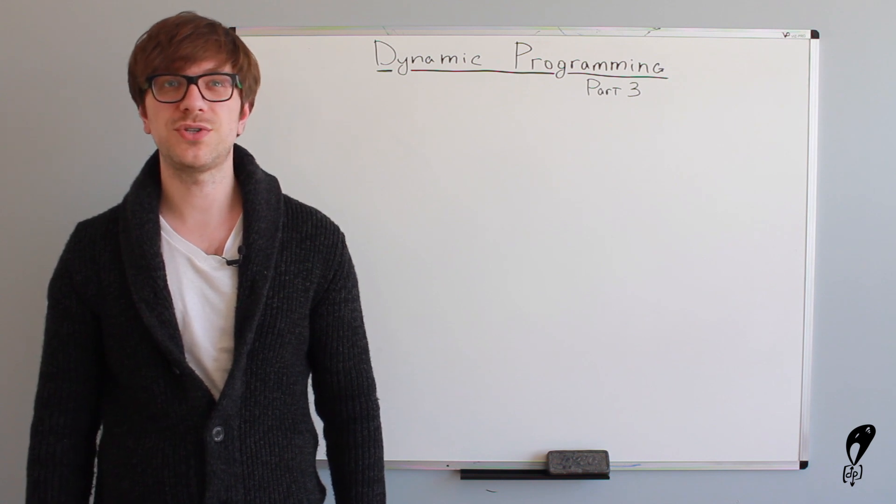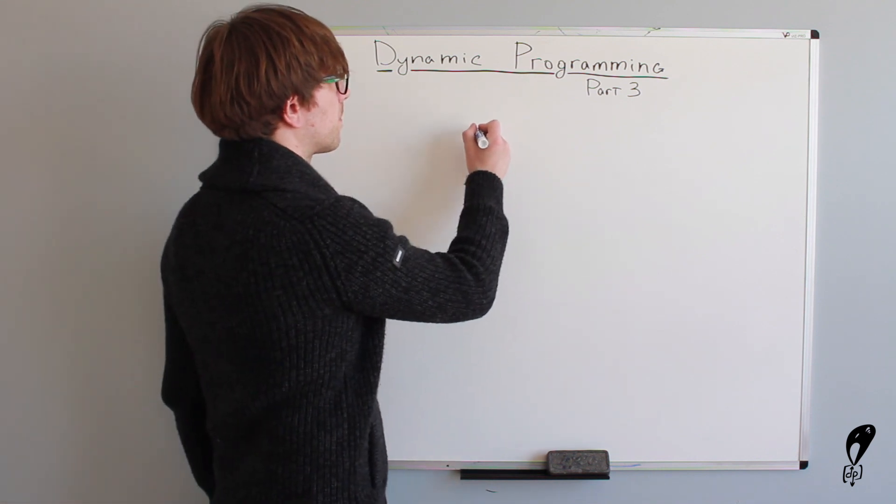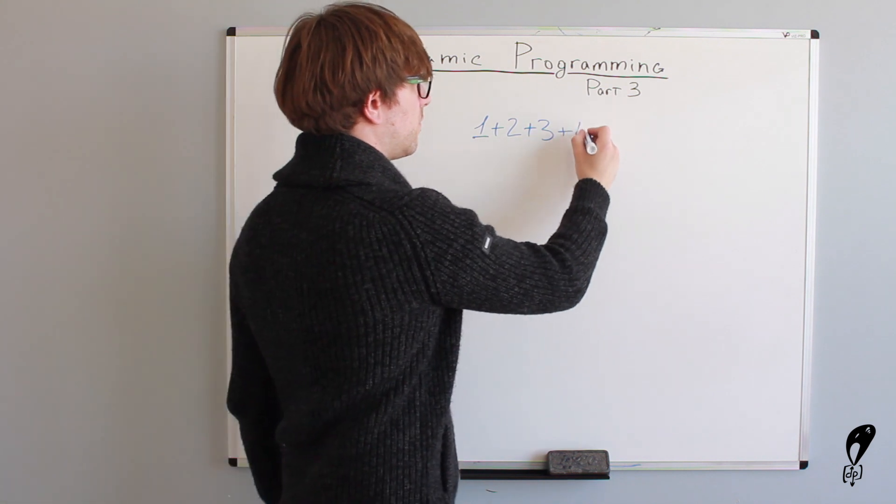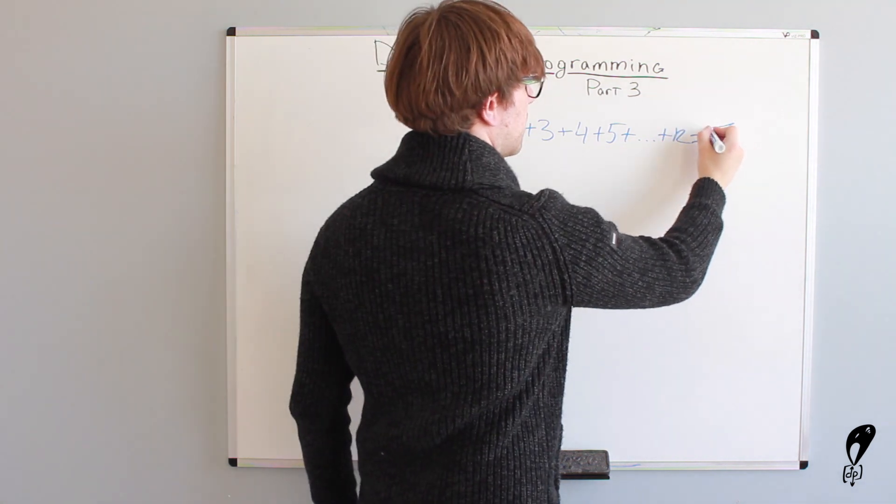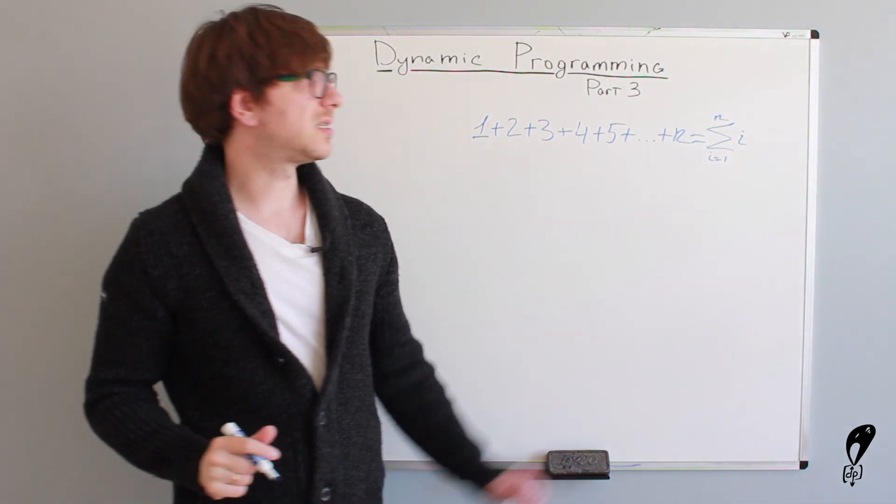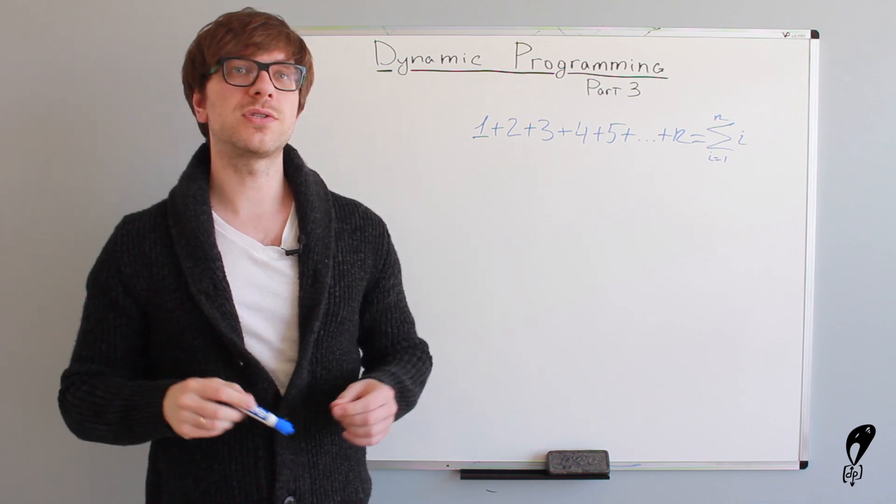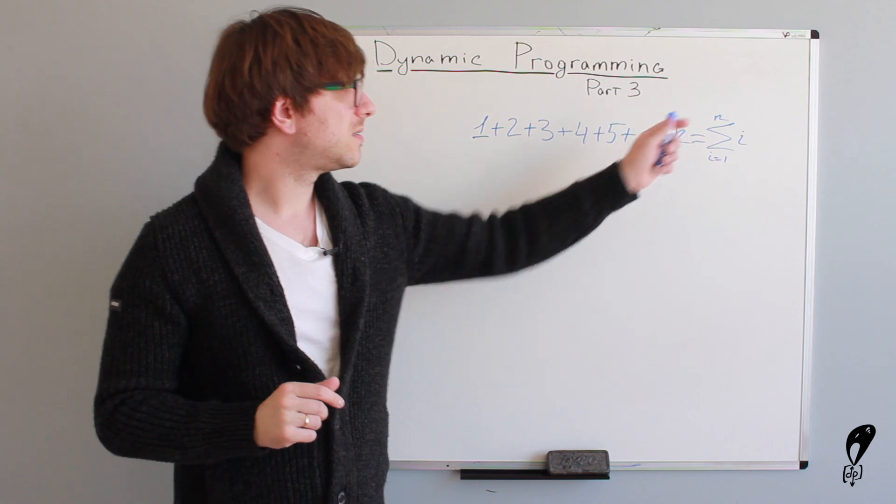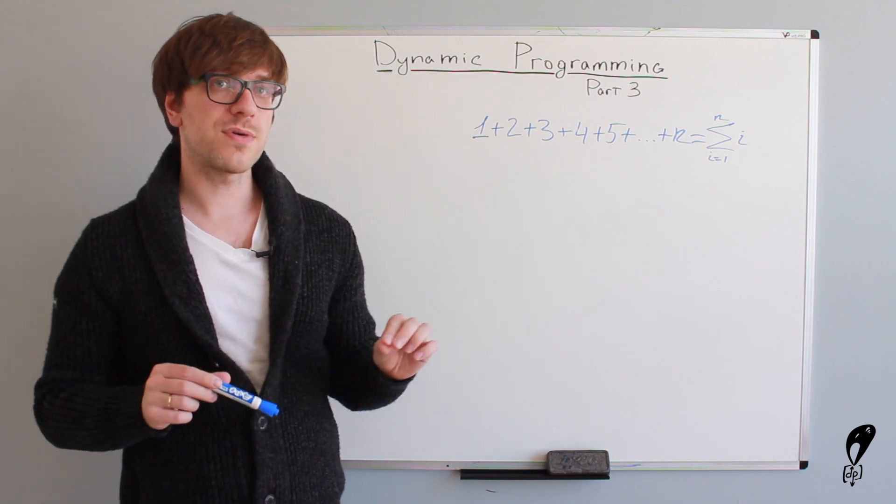Let's say we have a problem in which we need to find the sum of the first n numbers. So, we have something like 1 plus 2 plus 3 plus 4 plus 5 plus n. And this is a sum for all the i's starting from 1 to n, right? And by the way, for those of you who don't know what the sigma sign is, it's called the summation symbol, and it's an equivalent of a for loop in math. So, in this case, we want to run a for loop for all the numbers starting from 1 to n, and then add them together.